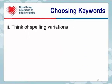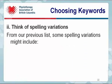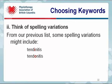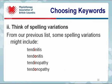You should also consider spelling variations. From our previous list, some spelling variations might include tendinitis spelled with an I or with an O, and tendinopathy spelled with an I or with an O.